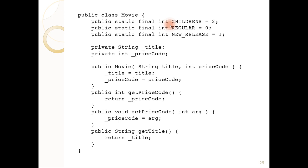Movies have type codes: children's movies, regular movies, and new releases. Children's movies are typically cheaper. Movies have a title and a price code, which is one of these static constants. You can create a new movie with a title and price code, and get or set the price code and get the title.